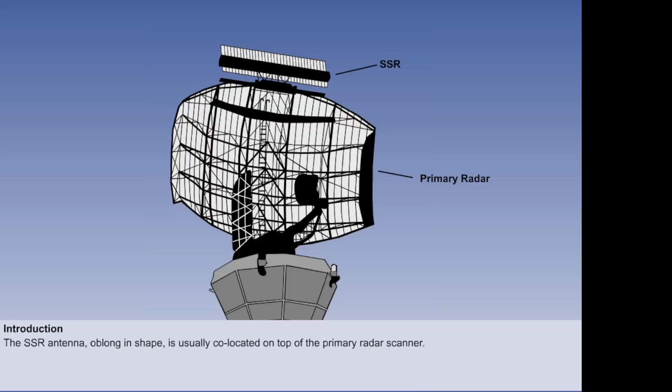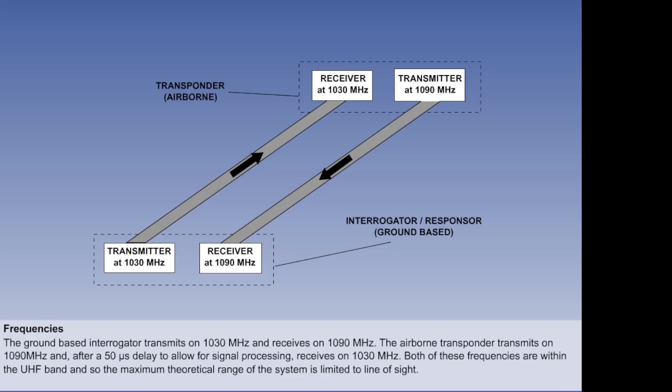The SSR antenna, usually oblong in shape, is in most cases mounted on top of the primary radar, so that the rotation of both antennae is synchronized. The ground-based interrogator transmits on 1,030 and receives on 1,090 MHz. The airborne transponder does the reverse. After a 50 microsecond delay to allow for signal processing, it transmits on 1,090 and receives on 1,030 MHz. Both of these frequencies are within the UHF band, and so the maximum theoretical range of the system is limited to line of sight.